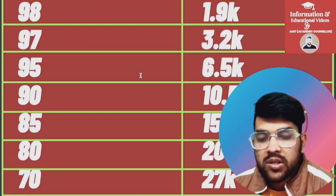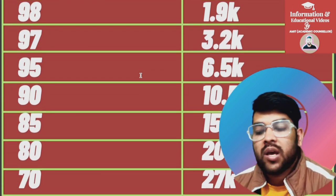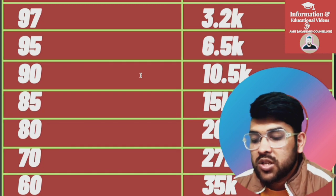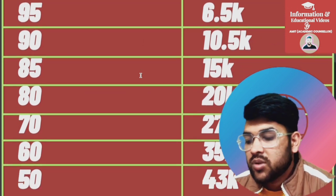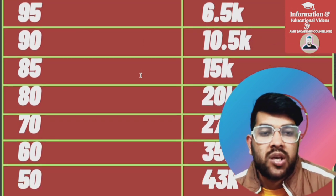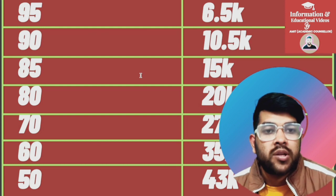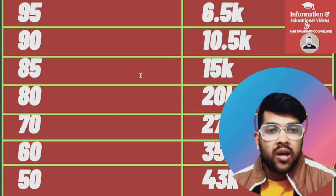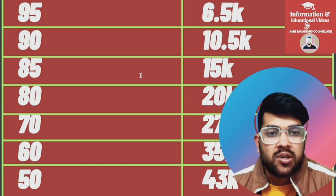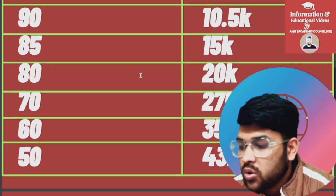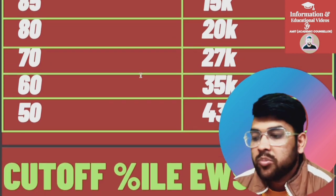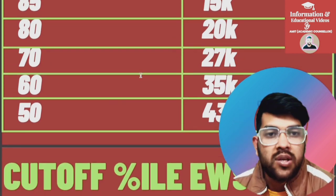For 80 percentile the EWS rank is around 20,000; for 70 it is 27,000 — these are upper limits, actual ranks will be under that. For 60 it is 35,000; for 50 it is 43,000. Total number of EWS students in JEE Mains is around 83,000 last year; it can be 85,000–90,000 this year as well.